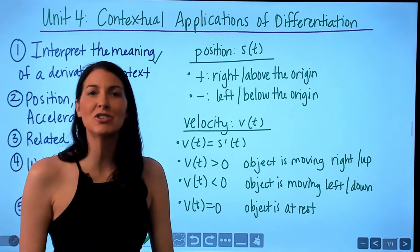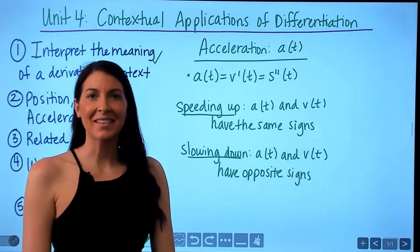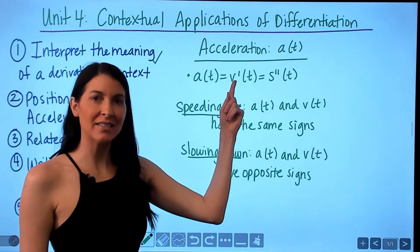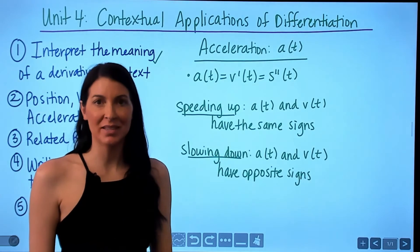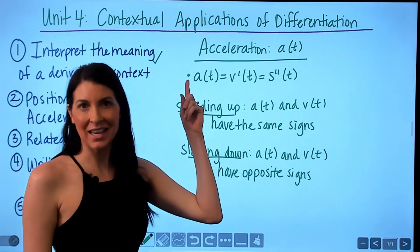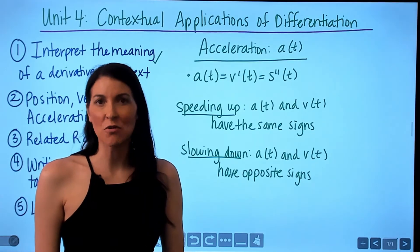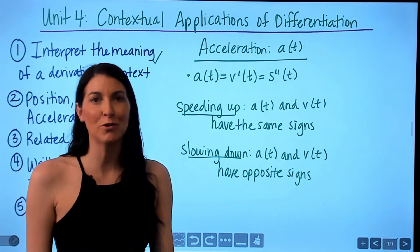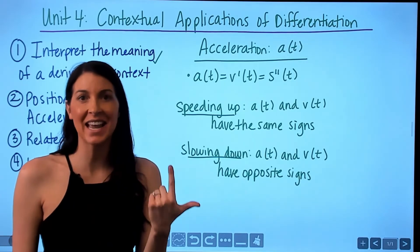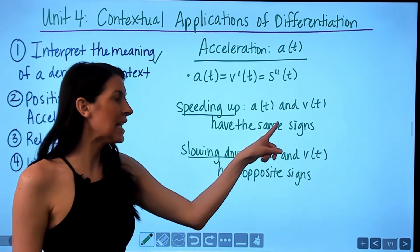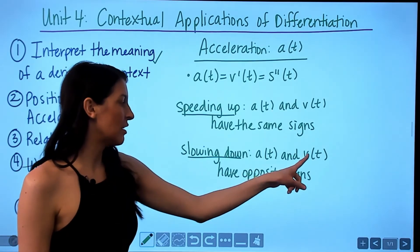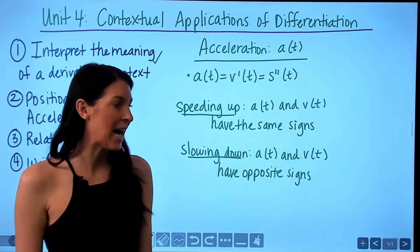If velocity is zero, the object is at rest. Acceleration, a(t), is the rate of change of velocity — the derivative of velocity, or the second derivative of position. To determine if an object is speeding up or slowing down, look at the signs of both velocity and acceleration. If they have the same sign, the object is speeding up; if they have opposite signs, the object is slowing down.